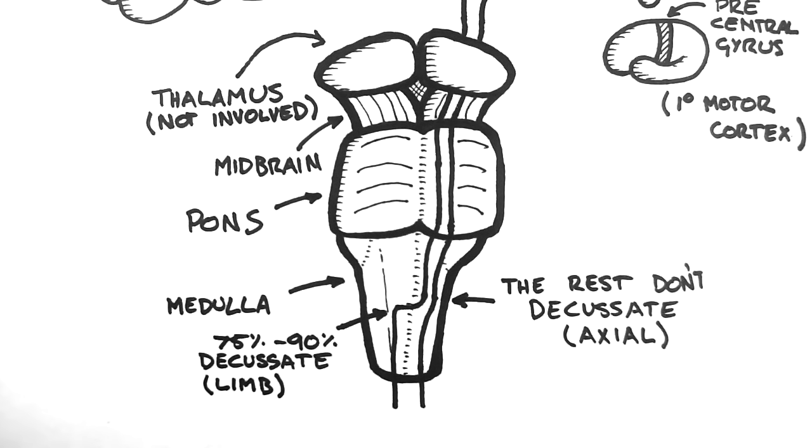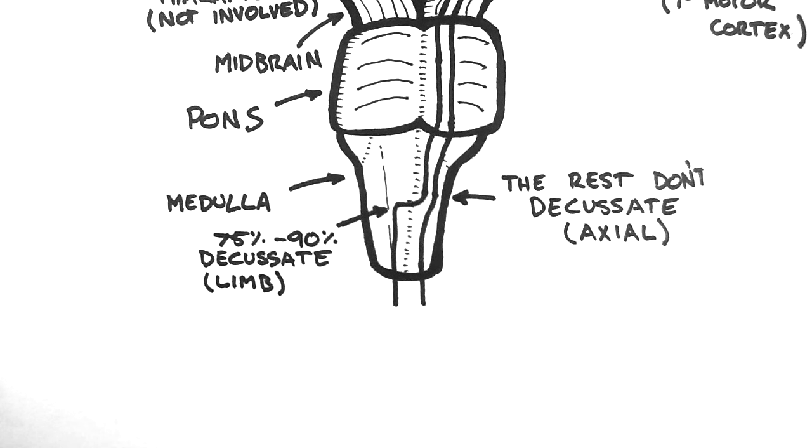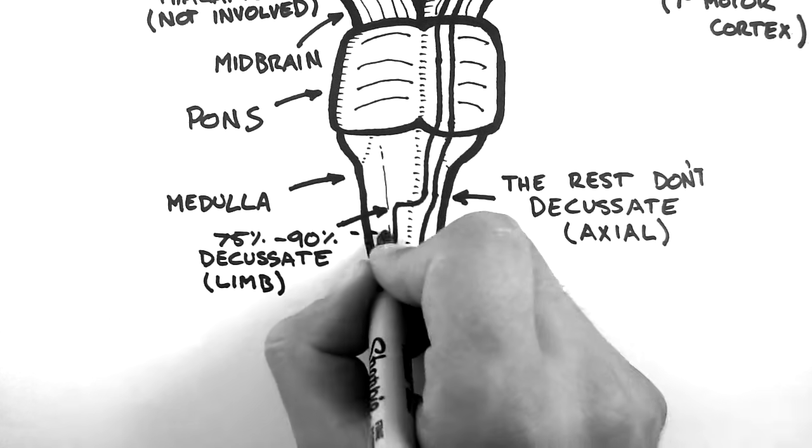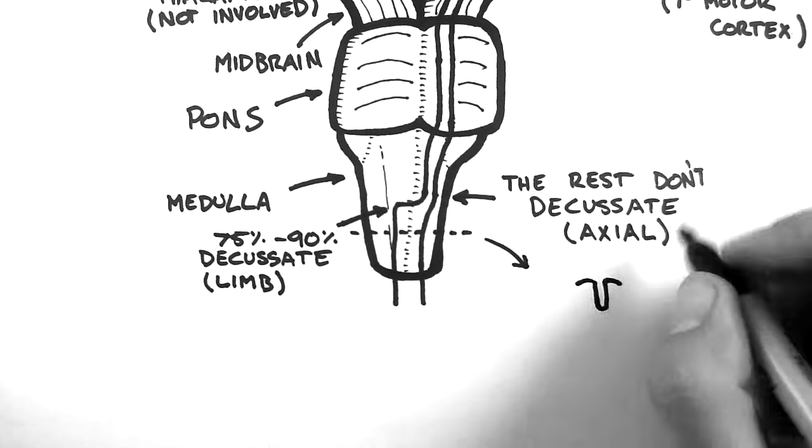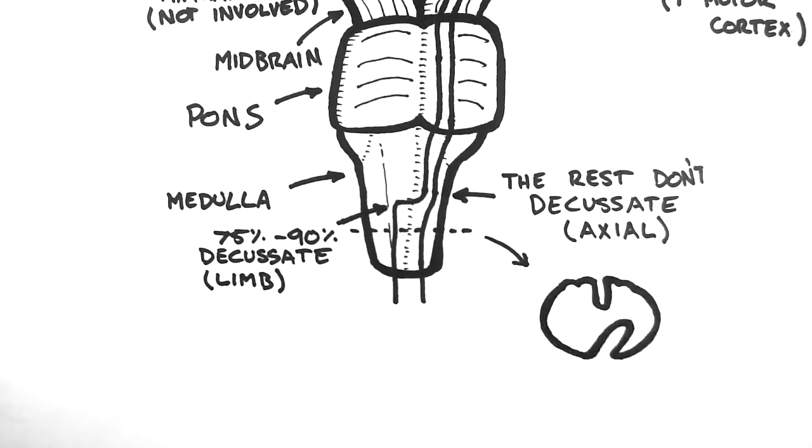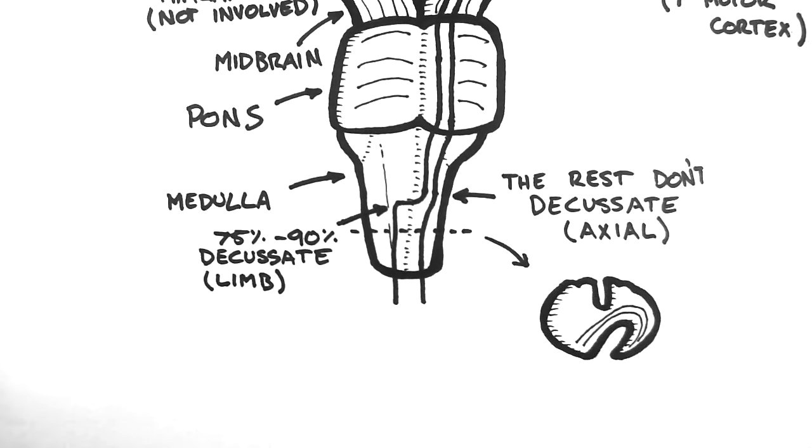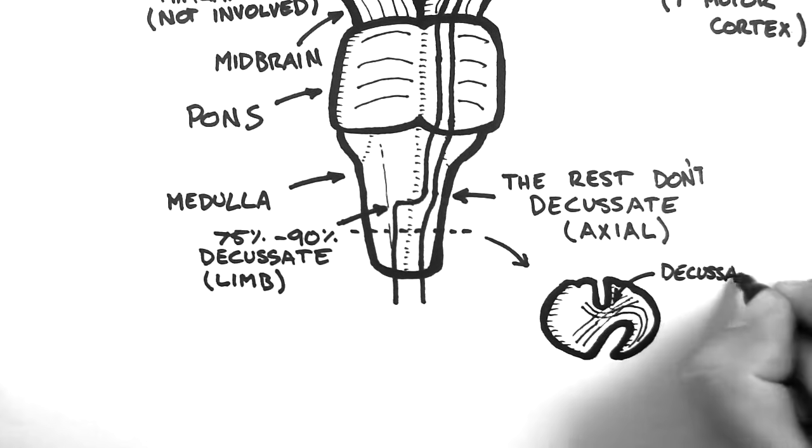This decussation is one of the biggest decussations, so it's worth looking at it further. If we take a cross section through the medulla here, we will see something like this. The fibres cross to the other side of the medulla, and we call this the decussation of the pyramids.